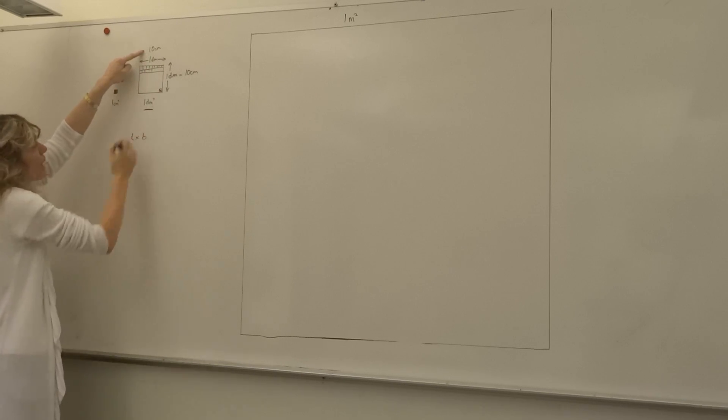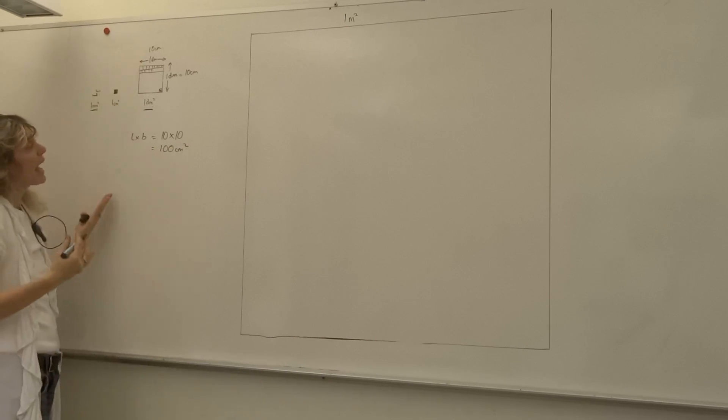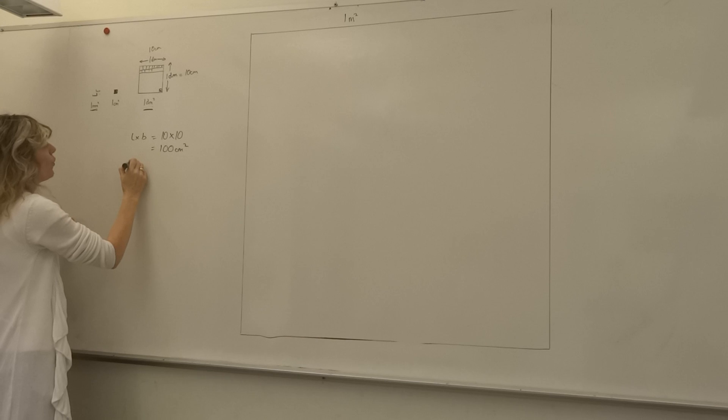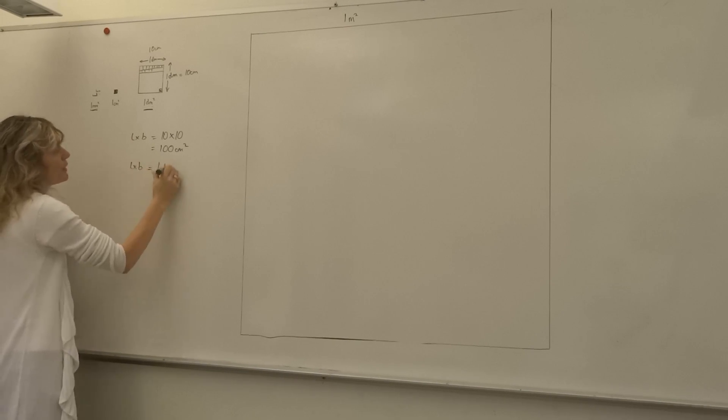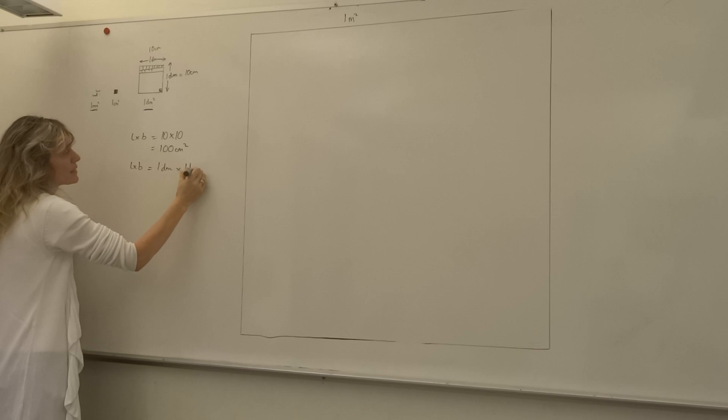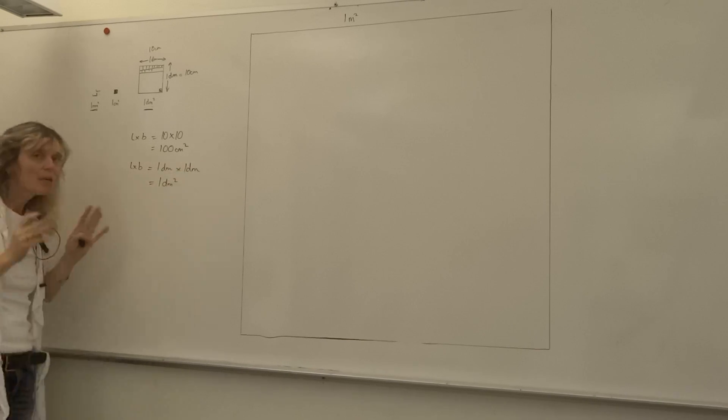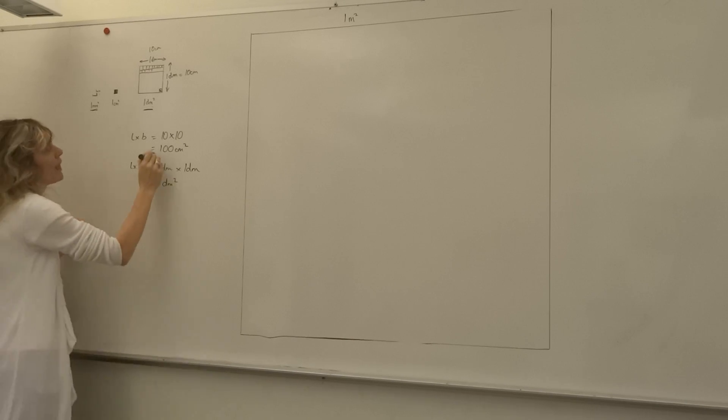But if we were to calculate the area in decimeters, we'd measure the length multiplied by the breadth, which would be one decimeter times one decimeter, which would be one decimeter squared. So there's a very important relationship here: if we're talking area, one decimeter squared is equivalent to 100 centimeter squared.